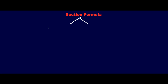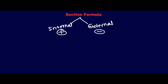The section formula is of two types: one is internal section and the other is external. In internal section the formula will have a positive sign, and in external section the sign will be negative. In this video we will learn about internal section, and in the next video we'll learn about external section — I'll put the link somewhere in the video.